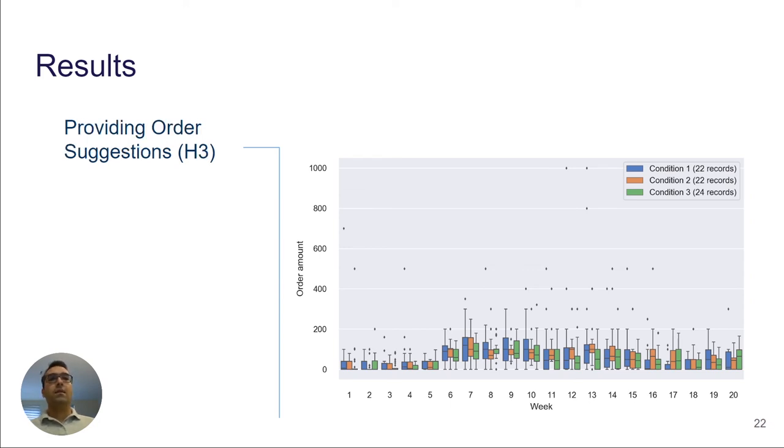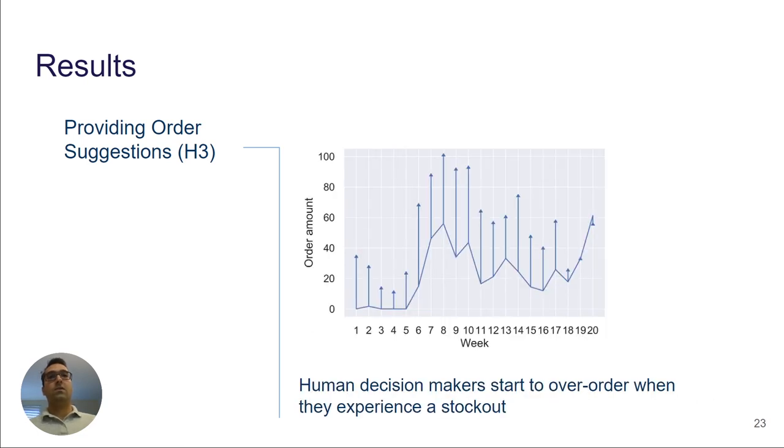Finally, while looking again at the same graph, we can see that providing order suggestions to players in condition 3 does not seem to have much impact on their ordering behavior, which contradicts our third hypothesis. However, an interesting finding is the deviation from suggested order amounts. Here, the error bars show how much on average players deviated from the order suggestions. As you can see, players tend to overorder at almost all time periods, and more specifically around week 6 when they discover the change in the demand and face the stockout. This is in line with the results of the bullwhip effect stating that human decision makers start to overorder when they experience the stockout.